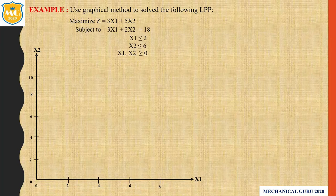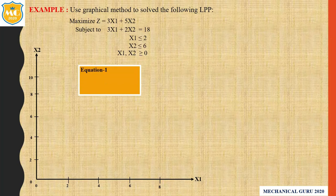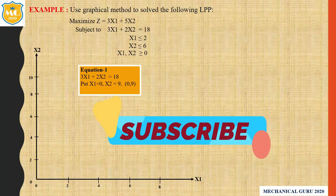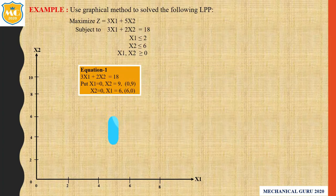First we consider the first constraint: 3x1 + 2x2 = 18. The simplest way to plot this line is to consider one coordinate as 0 and find the intersection point with each axis. Put x1 = 0, we get x2 = 9, giving coordinate (0, 9). Put x2 = 0, we get x1 = 6, giving coordinate (6, 0). Now we plot these coordinates on the graph.